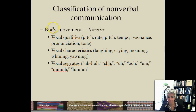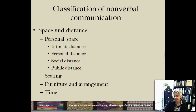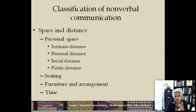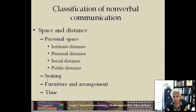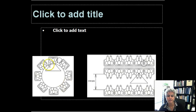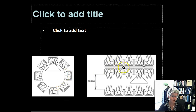Space and distance — this is a field called proxemics. Proxemics covers territory, the fixed geographic space, as well as the idea of a personal space bubble. Here we have the four main zones of personal space. Seating — what we call socio-fugal and socio-petal arrangements. This is one type of seating arrangement that's conducive to interaction, and this one is not.